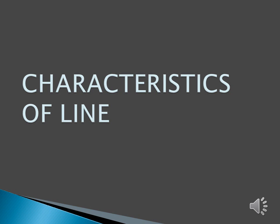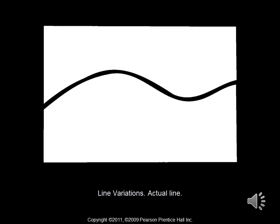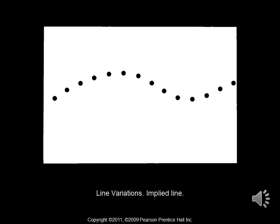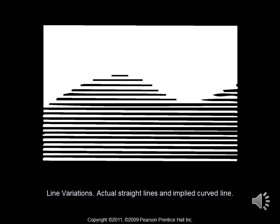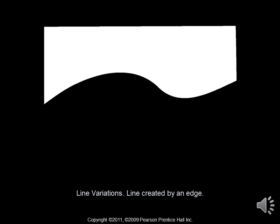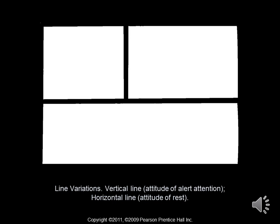To further delve into line itself, we're going to go over the characteristics of line. First we have an actual line — this is pretty much what you would consider what happens when you draw a line on paper. Here we have implied line: there is no physical line on this paper, but there are a series of dots in a curve that give us an implied line. In this example, actual straight lines form an implied curved line, where you see the darker areas on the bottom and the whiter area on top, and where they meet you have an implied curved line. Here again, we have no physical line, but a line created by an edge where the black area and the white area meet to create a wavy line.